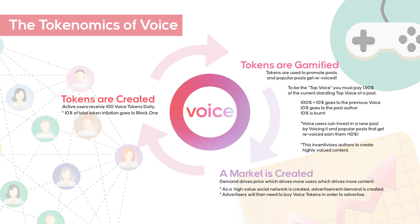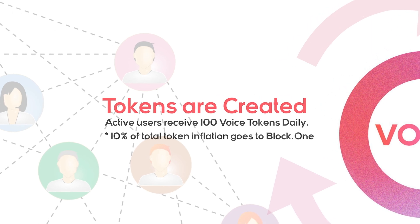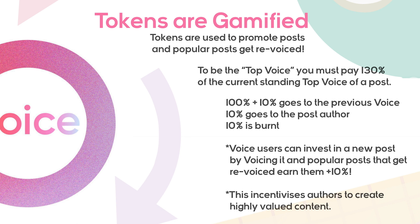Let's talk voice tokenomics. The tokenomics of Voice might be a bit difficult to understand at first, but it's really very simple as shown in the graphic we created. It all starts when voice tokens are created — every active member on Voice is minting 100 voice tokens daily by logging in. Next, tokens are gamified. Tokens are used to promote posts by voicing them, and popular posts get revoiced. To be the top voice, you must pay 130% of the current standing top voice of a post. The previous top voice gets back 100% of their bid plus 10%; 10% goes to the post author, and 10% is burned. This gamification pushes quality posts to the top, creating quality and value on the platform.